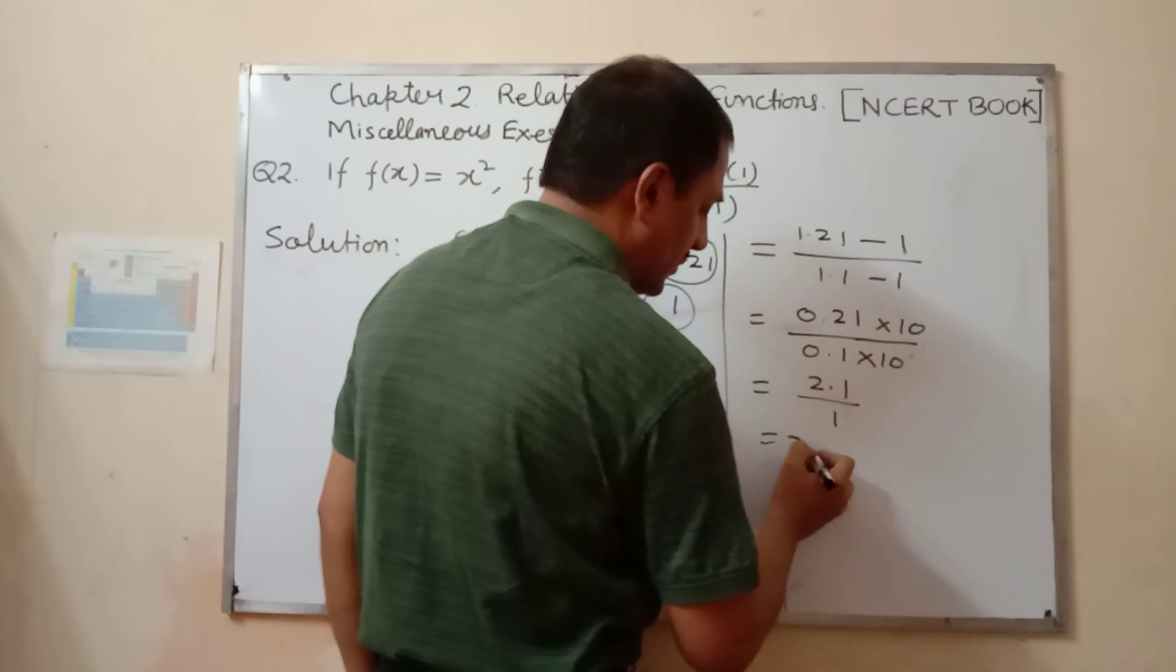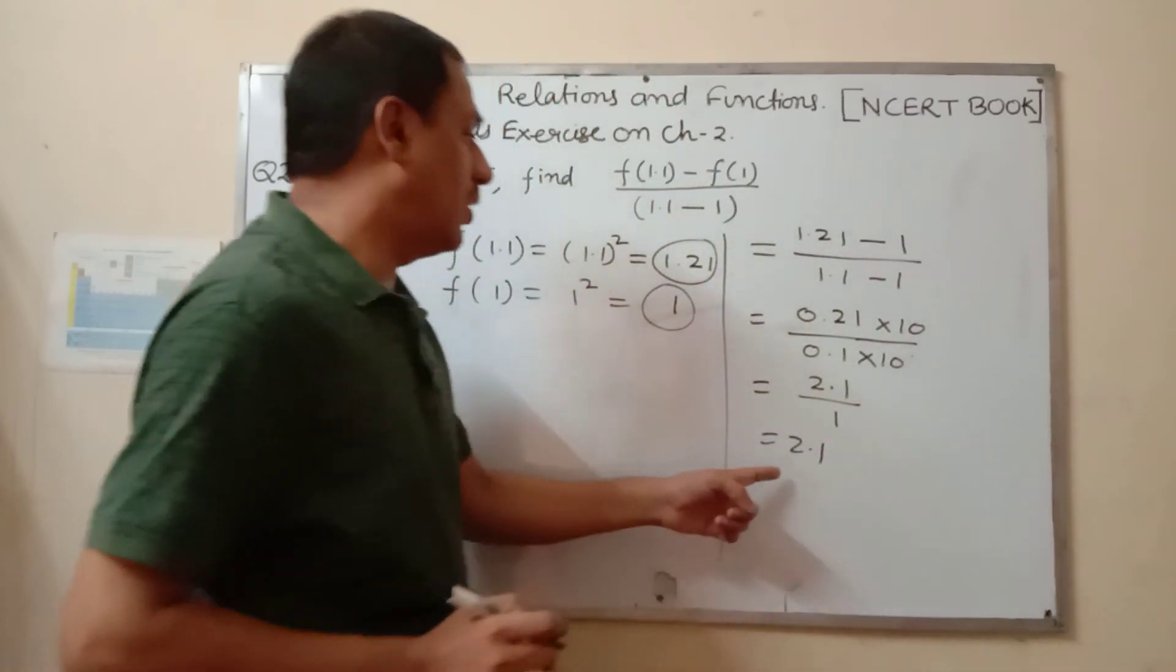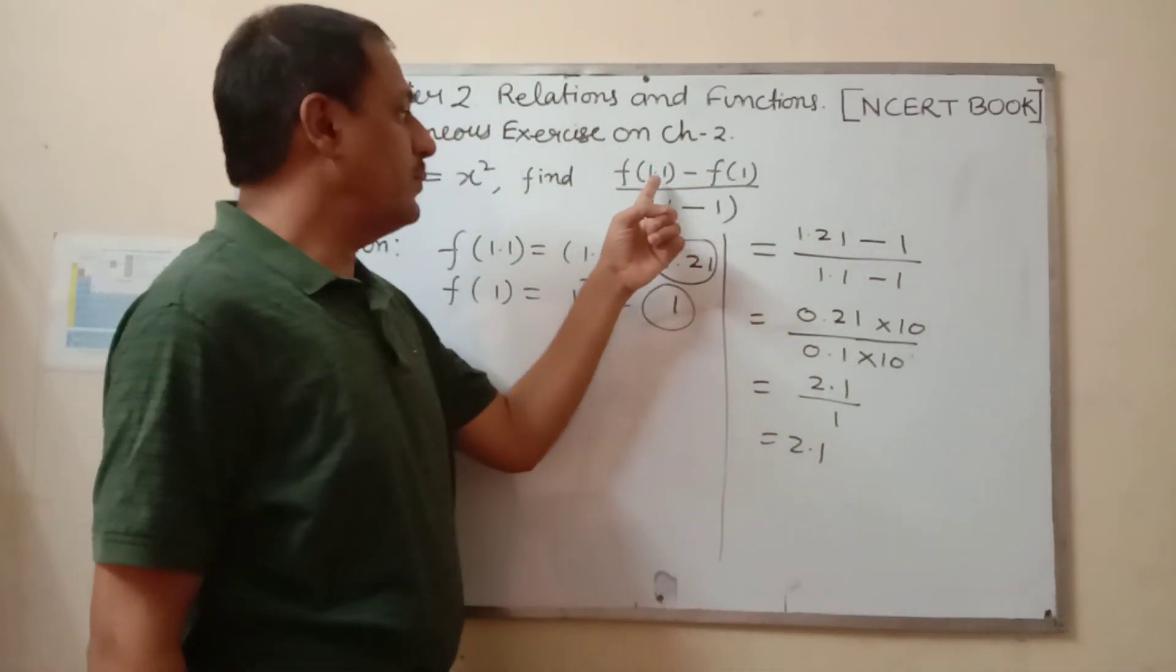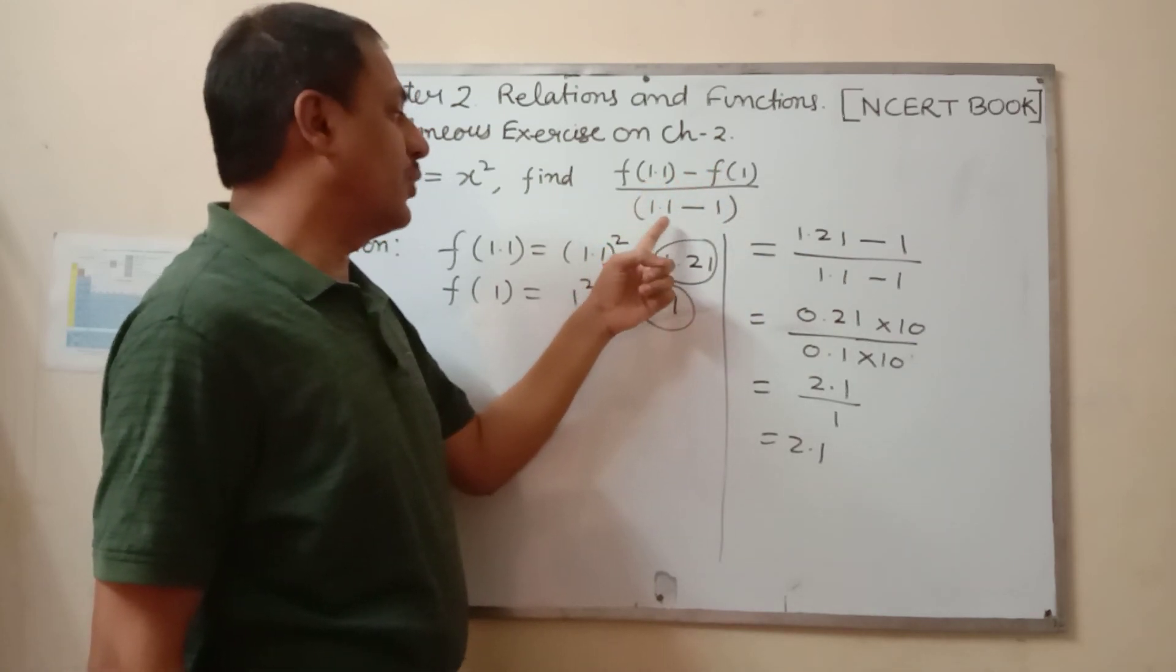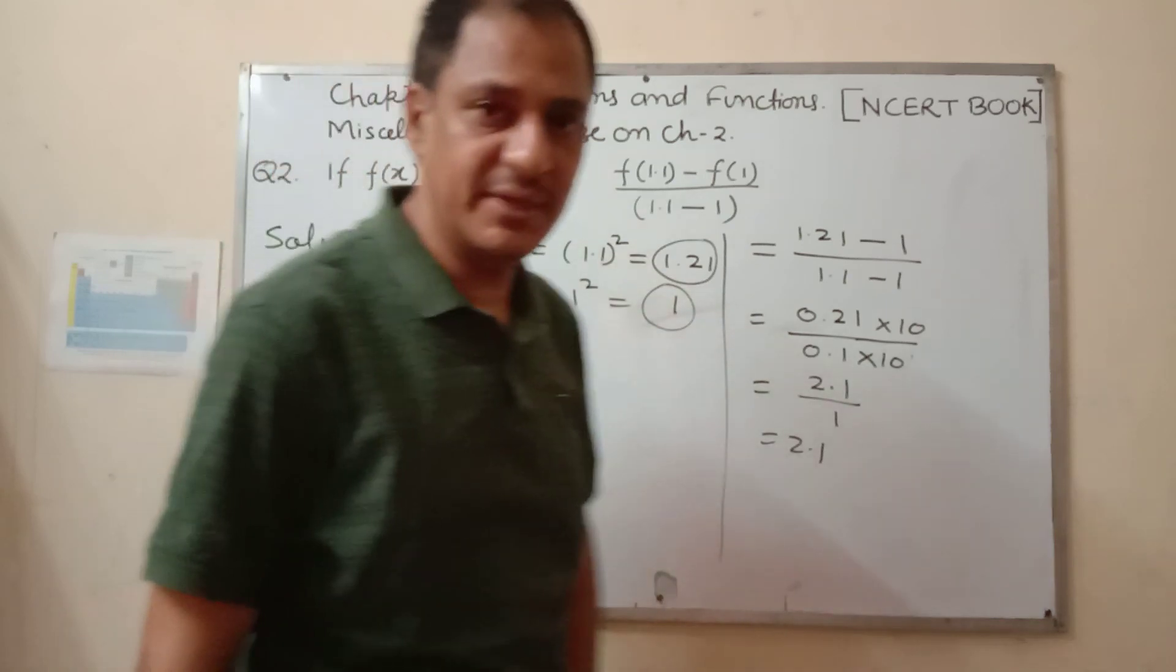It will become equal to 2.1. This is the value of [f(1.1) - f(1)] / (1.1 - 1). Thank you, children.